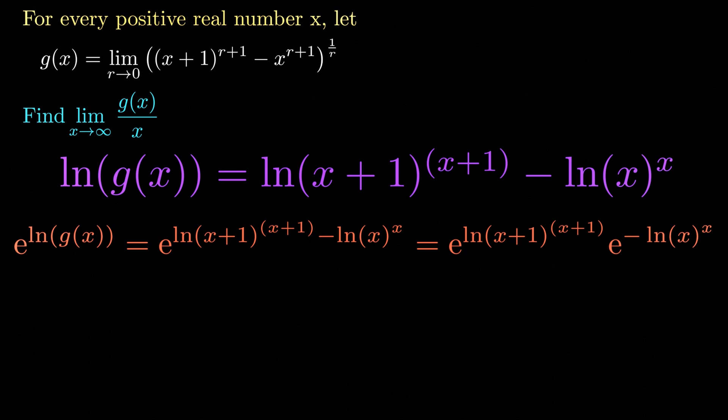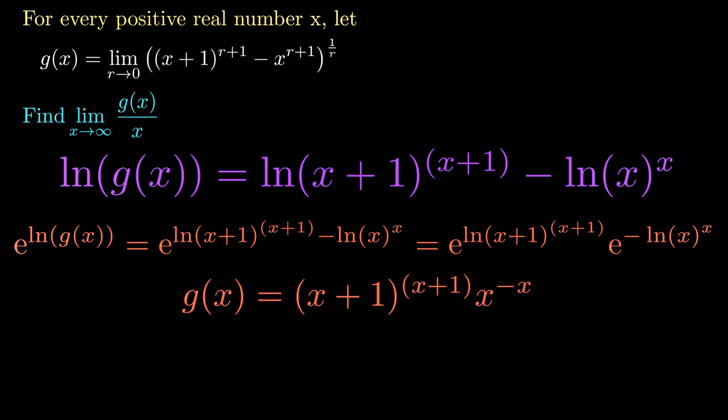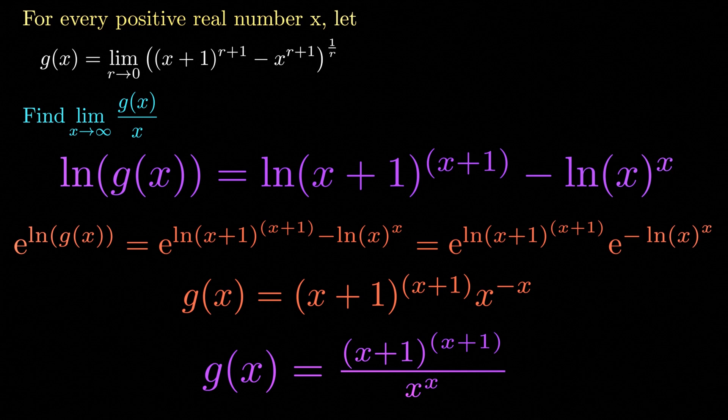We have e raised to the natural logarithm of x plus 1 raised to x plus 1, multiplied by e raised to the natural logarithm of x raised to negative x. This tells us that g of x is equal to x plus 1 raised to x plus 1 multiplied by x raised to negative x, which we can rewrite as g of x equals x plus 1 raised to x plus 1 divided by x raised to x.